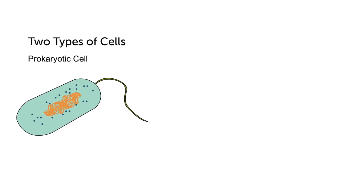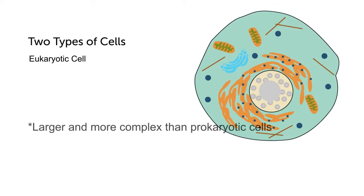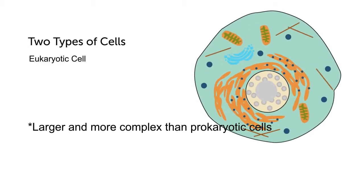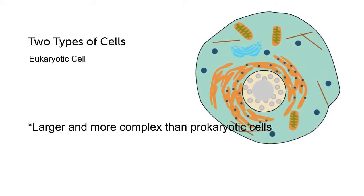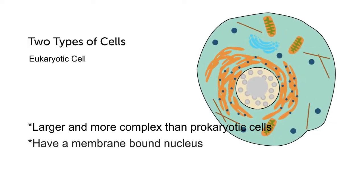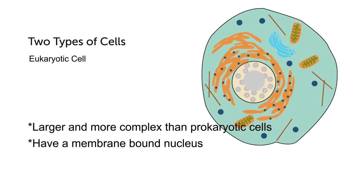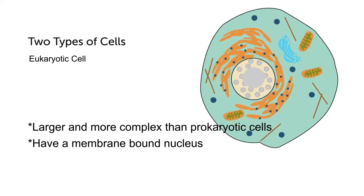The larger and more complex type of cells are eukaryotic cells. Large living plants and animals are made up of trillions of eukaryotic cells. Eukaryotic cells have a membrane-bound nucleus, which is a sac inside the cell that contains the cell's DNA.